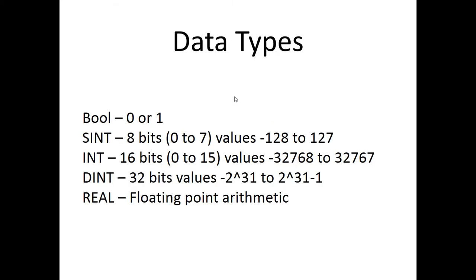Let's review data types one more time. Mostly we've been using Boolean data types, which are 0 or 1, used for our digital inputs and outputs such as pushbuttons and lights. SINT has 8 bits — eight zeros and ones — giving values from negative 128 to 127.